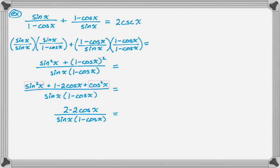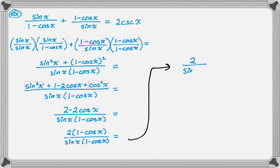That numerator actually factors, so I'm going to show it over the denominator. I can now cancel my one minus cosine over one minus cosine. I have two over sine. Well, one over sine is cosecant, so this is just two cosecant, and we're done with that one.